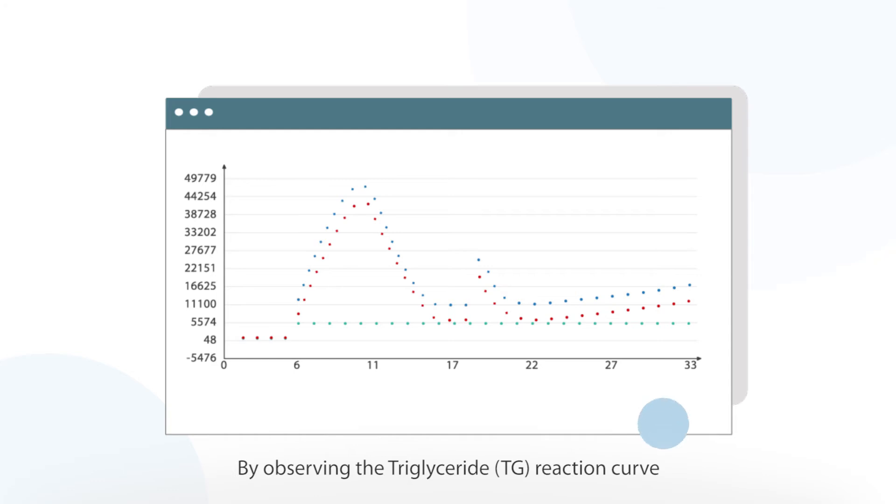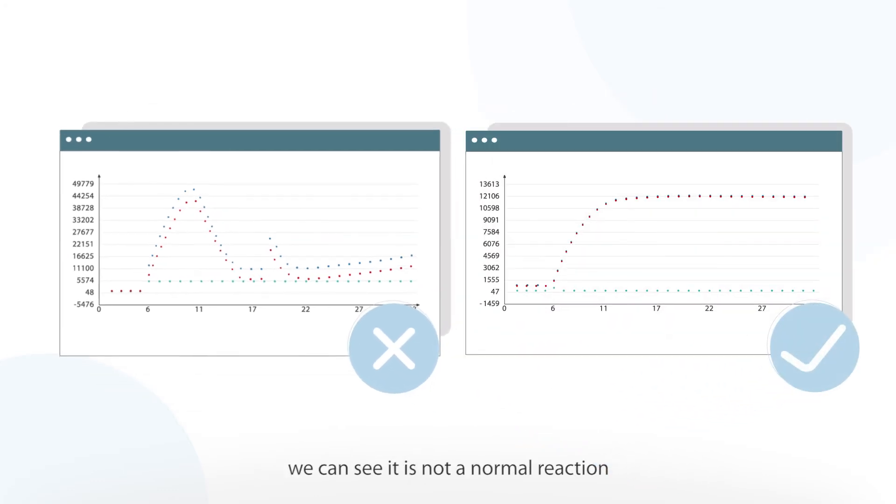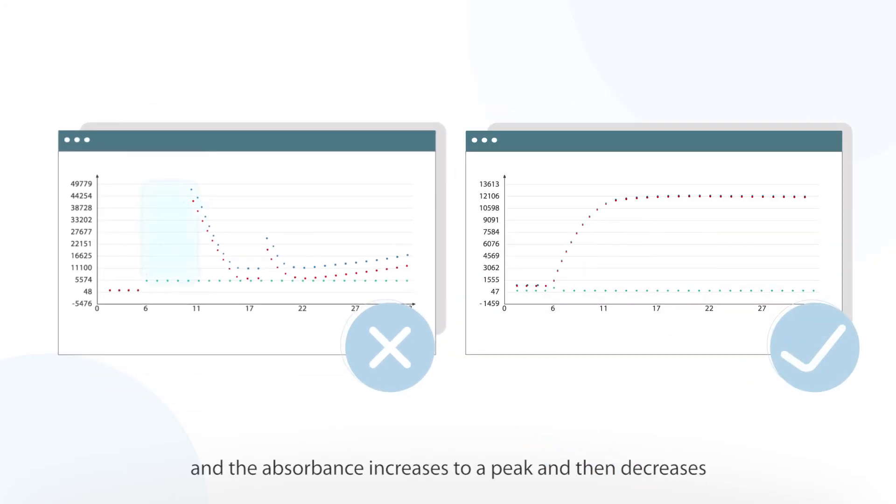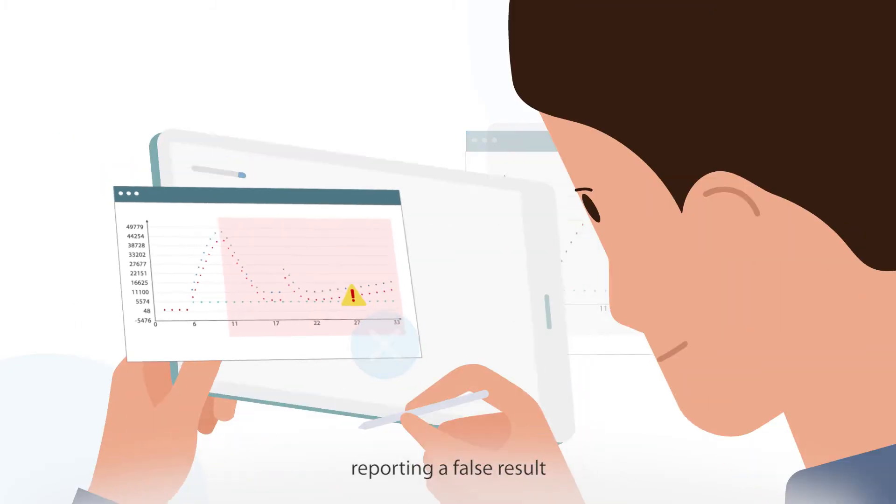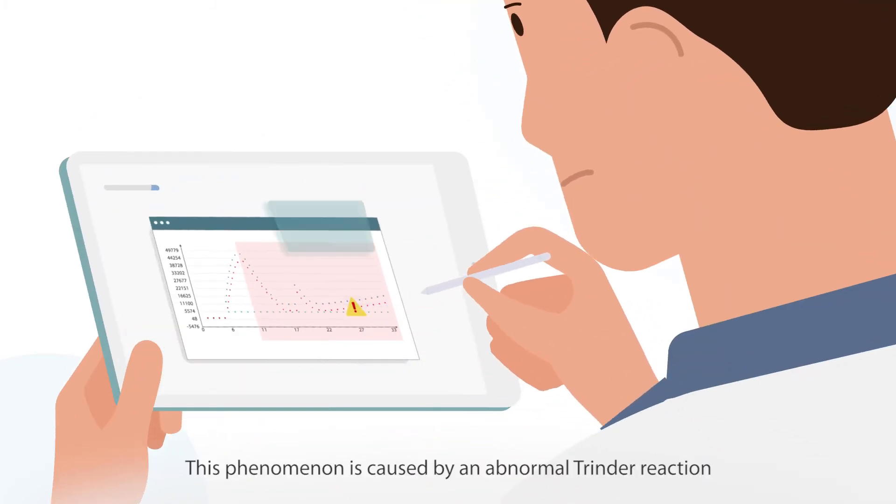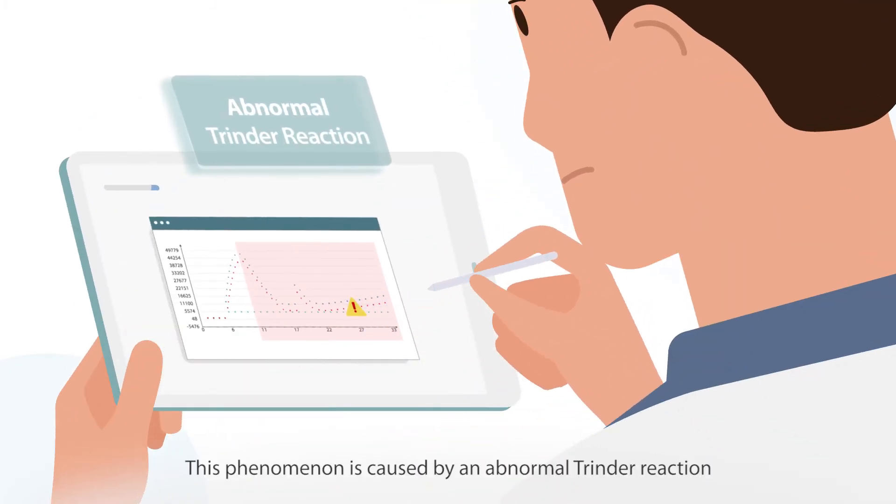By observing the triglyceride reaction curve we can see it is not a normal reaction and the absorbance increases to a peak and then decreases reporting a false result. This phenomenon is caused by an abnormal trender reaction.